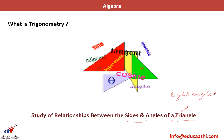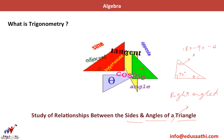A right-angled triangle is a triangle which has one angle equal to 90 degrees. If I take one angle as theta, then the opposite angle becomes 180 minus 90 minus theta, which gives us 90 minus theta.